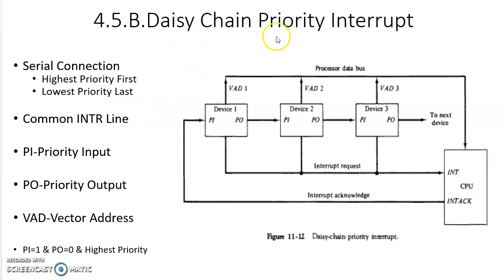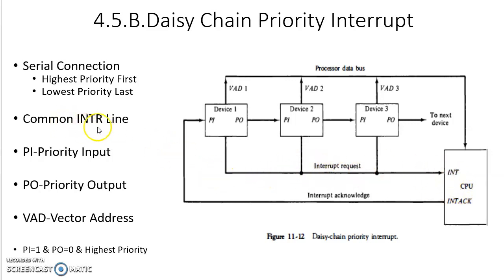In daisy chaining priority interrupt, all the devices are connected in a serial manner, starting with the highest priority device and then second highest, third highest, and so on. All the devices send interrupt requests to the CPU through a single common interrupt line. When the CPU responds through an interrupt acknowledgement, that signal will reach the device with highest priority.